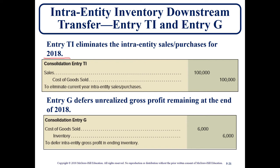Now we look at current year transactions. Consolidation entry TI reverses the sales related to current year 2018 sales only — not the 2017 sales. We also have to defer the gross profit from the sale of inventory if there's any inventory remaining at year end. In that case, cost of goods sold is increased, which decreases net income, and we also decrease inventory to set it back to its original cost.